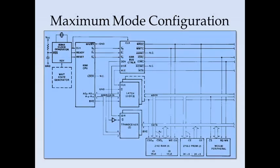In maximum mode configuration, more than one processor is present. A bus controller (8288) is used; it applies ALE for latching, and provides DEN and DT/R signals for the transceivers. Instead of direct read/write signals from the processor, the bus controller issues memory read, memory write, I/O read, or I/O write commands, along with advanced signals for the peripherals.